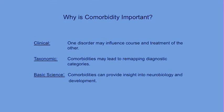Why should we care about comorbidity? It's super common among behaviorally defined disorders, so it's a puzzle we need to understand. It's also clinically important: if you see a child with two disorders and only diagnose one, you may miss an important treatment target. For example, if a child has oppositional defiant disorder and you only treat that and miss that he's also dyslexic, some of his ODD symptoms might actually be coming from the frustration of not knowing how to read.